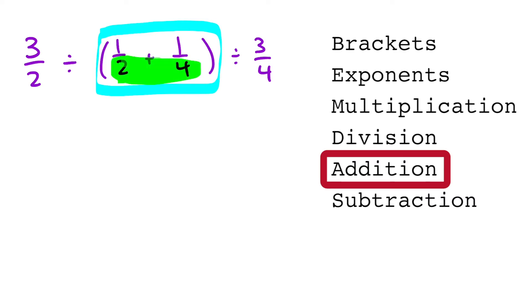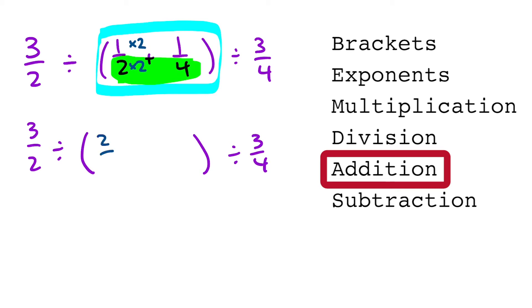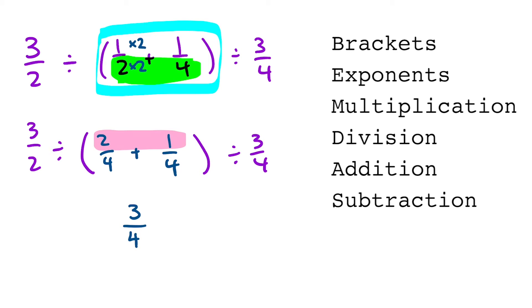In order to make 2 and 4 the same denominator, I'm going to take the one half and multiply the top and bottom by 2. Leaving all of the rest of this exactly the same, we now have 2 over 4 plus 1 over 4. When that gets added together, we add just the top parts, so 2 plus 1 gives us 3 over 4. Now let's write down the rest of the question as it was with no changes.